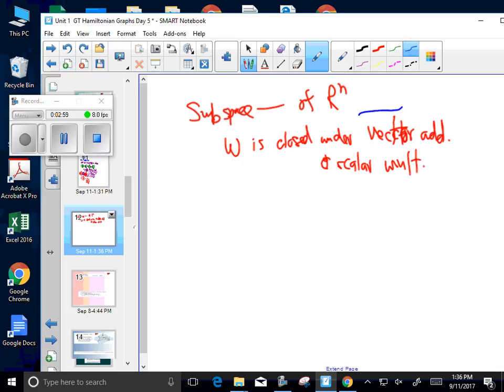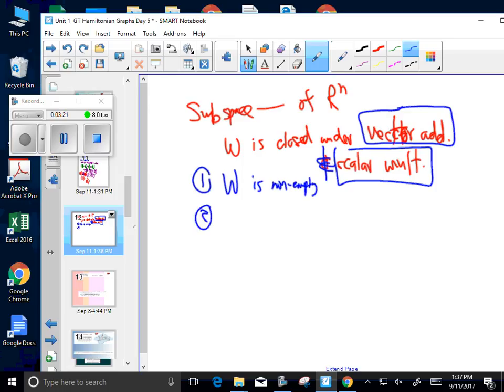So vector addition is one thing you have to do, scalar multiplication is the other. And with those two, you can say that you're going to be able to find the space. So the two conditions, they said W is non-empty. That's easy. We'll see how to do that.